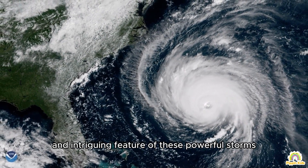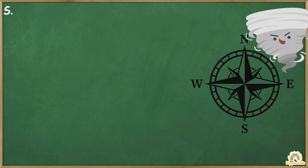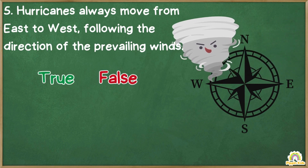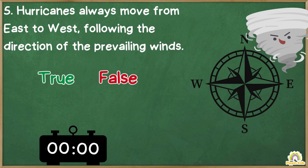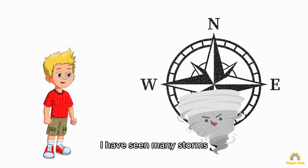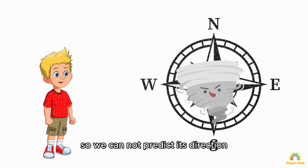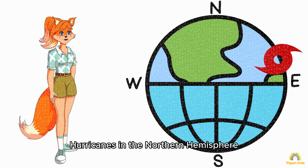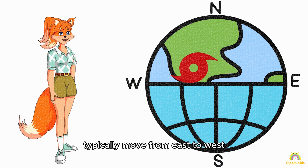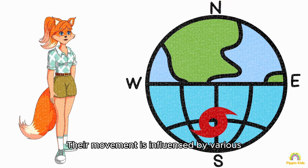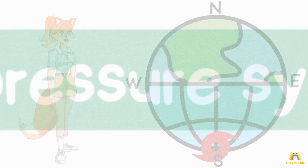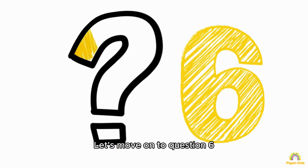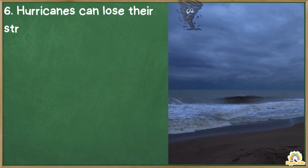Question number five: hurricanes always move from east to west, following the direction of the prevailing winds — true or false? I have seen many storms coming with very little information, so we cannot predict their direction. False is my answer. Hurricanes in the northern hemisphere typically do move from east to west, but their actual path can vary. Their movement is influenced by various atmospheric and environmental factors, such as high pressure systems and the Coriolis effect, which can cause them to change direction.